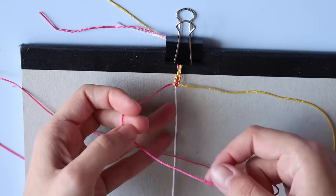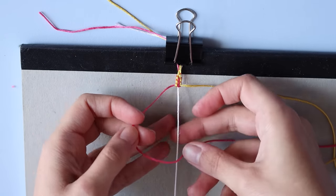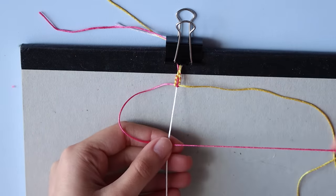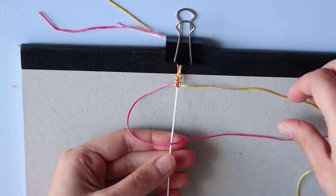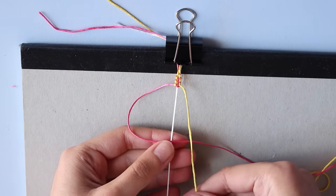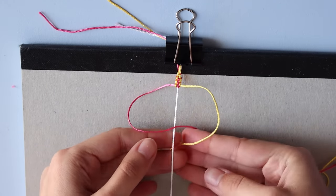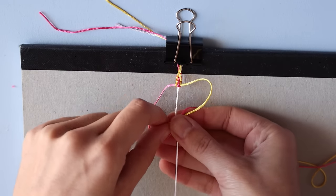Here's another look with different colored strings. Cross the left one over the one in the center, place the right one over it and bring it into the loop coming from the back. Tighten.